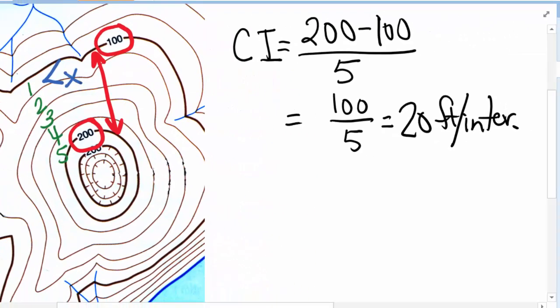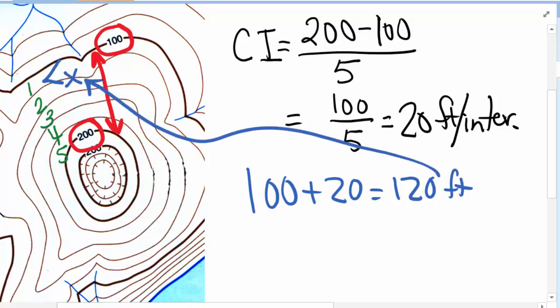with this line right here, we're going to have to add 100 plus the interval 20 to give us 120 feet for the value of that line.